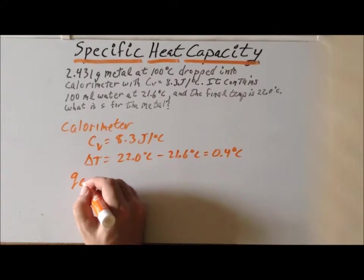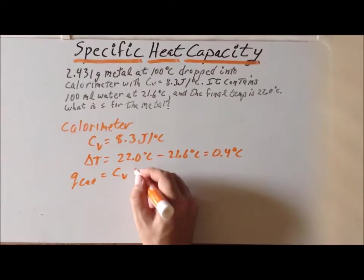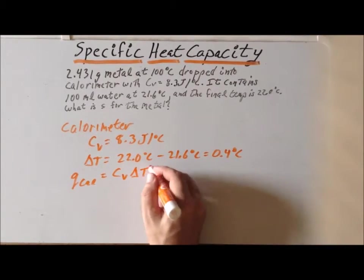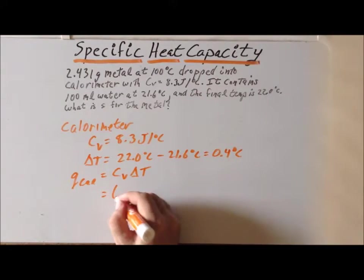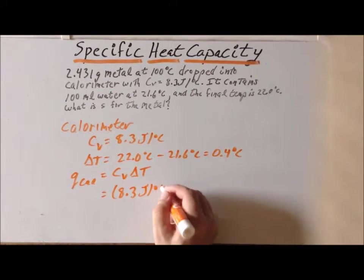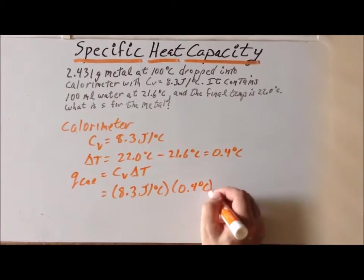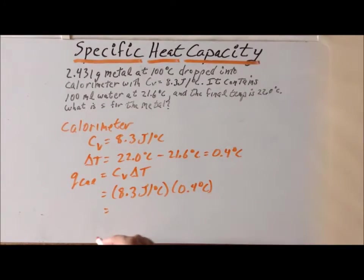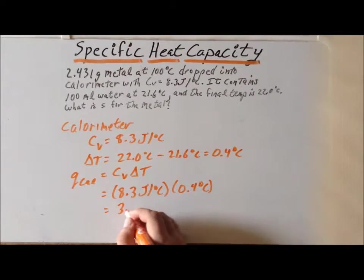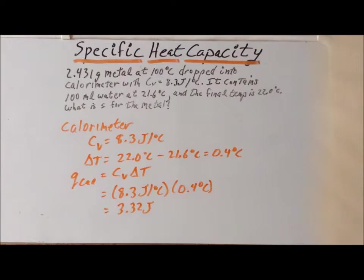Now, Q for the calorimeter is equal to the heat capacity, C sub V, times delta T. So, this gives us 8.3 joules per degree centigrade, times the temperature change of 0.4 degrees centigrade. So, our net result is 3.32 joules for Q cal.